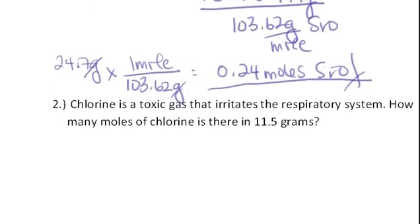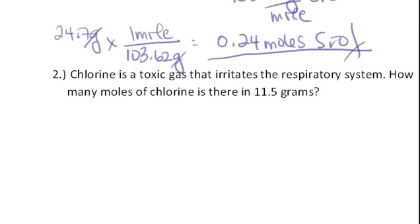What about another one? Chlorine is a toxic gas. How many moles are there in 11.5 grams? We need to do this the same way, except we're not given the molecular formula for chlorine. One thing you need to know about chlorine is it's homodiatomic and exists as Cl2.